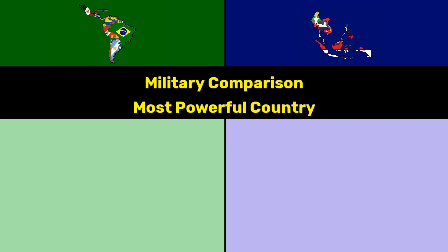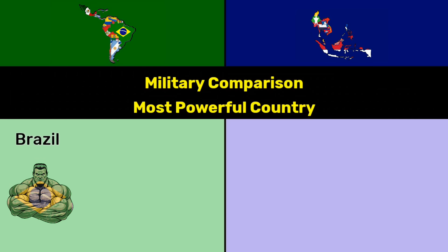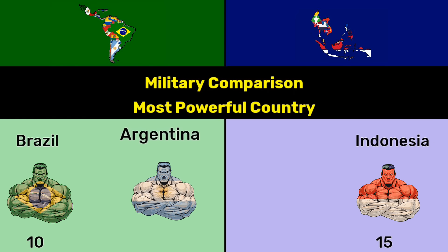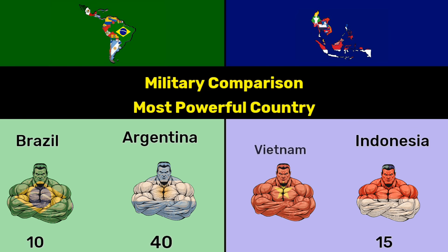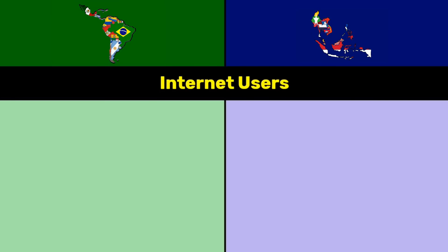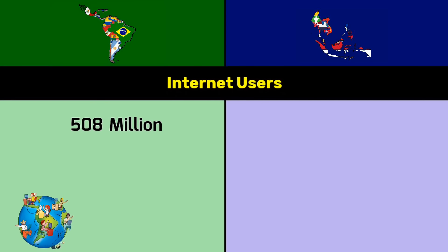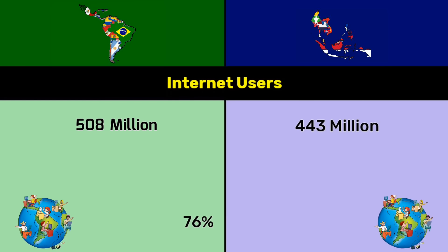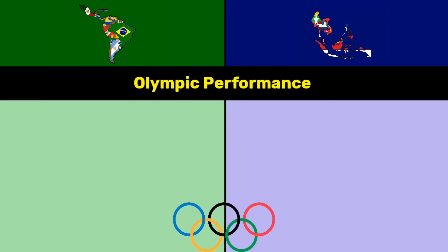Most powerful country by military rank: Brazil ranked 10th and Indonesia ranked 15th; Argentina ranked 40th and Vietnam ranked 28th. Internet users: 508 million — 76 percentage of Latin America's population — versus 443 million — 65.14 percentage of Southeast Asia's population.